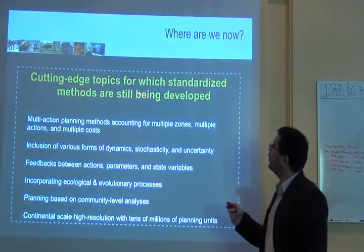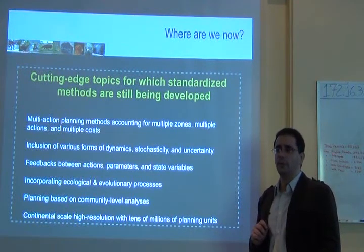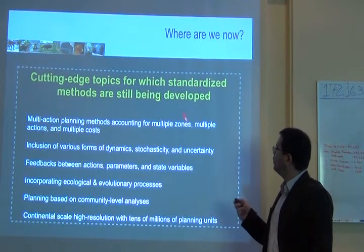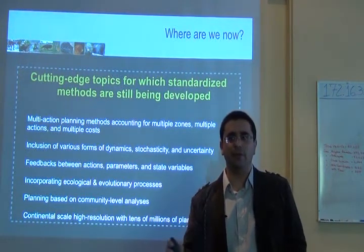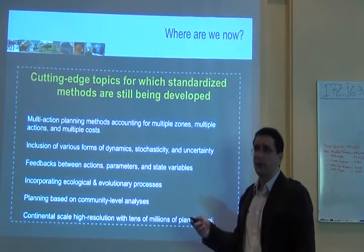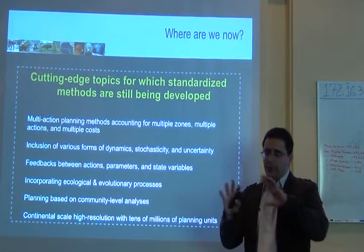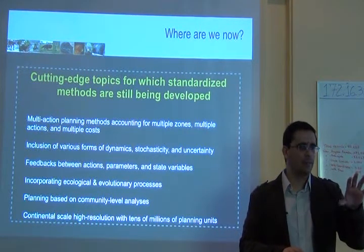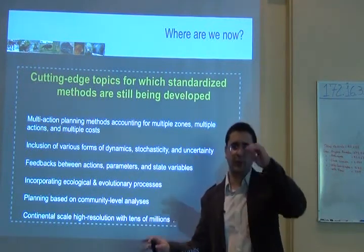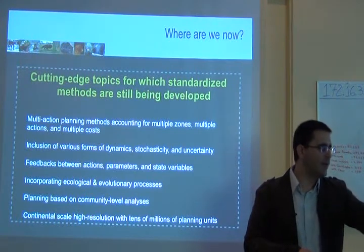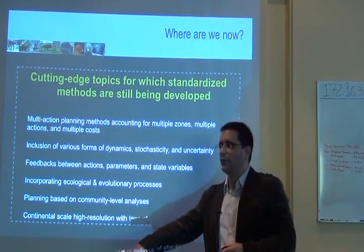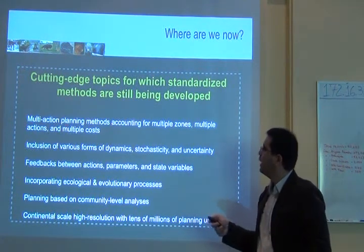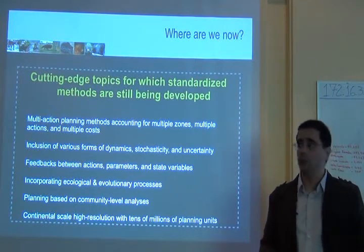There are some cutting-edge topics for which standardized methods are still being developed. Methods to deal with multi-action planning — methods that account for multiple zones, multiple actions, and multiple costs — are still being developed. We now have software called Marxan with Zones that tries to do this. For the same region you're planning, you have different sub-regions or zones, and the action in each zone differs: here you manage fire, there you control species invasion, elsewhere you protect more areas. It is multi-action planning with multiple zones, multiple costs, and multiple objectives.